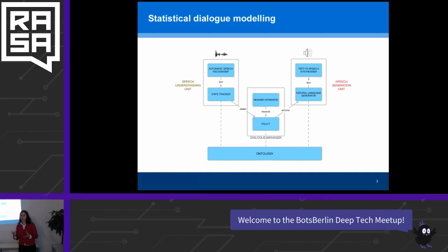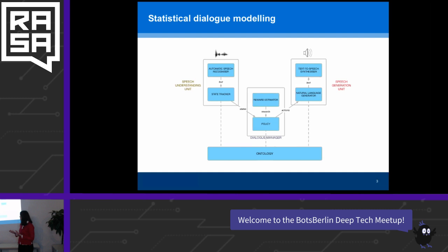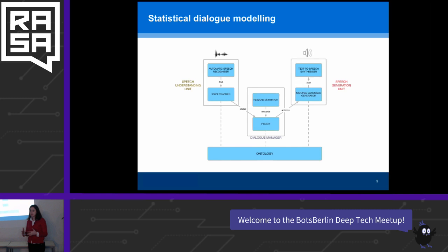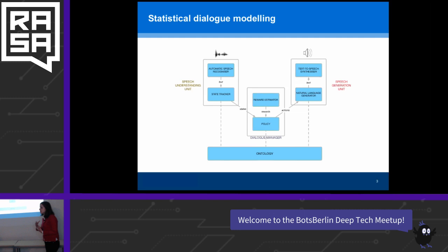When the user speaks, their speech is recognized by an automatic speech recognizer and turned into text. Based on this text, we extract dialogue states, and based on these states the dialogue manager and the policy make decisions — we call these actions. These actions are evaluated by some external or internal metrics, and more formally with a reward estimator. These actions are then passed to a natural language generator which generates text, and finally to a text-to-speech synthesizer which generates speech.